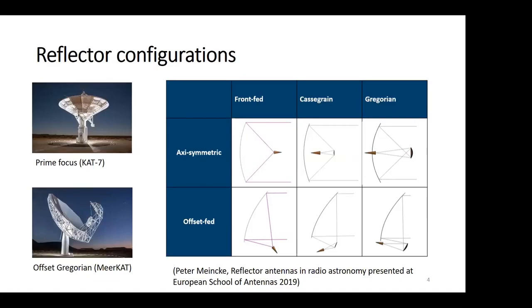A single reflector just has one main reflector, while the dual reflector has a main reflector and sub-reflector.